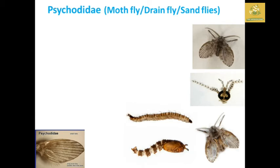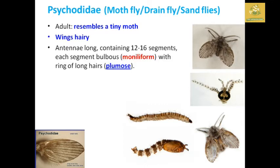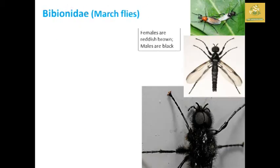Psychodidae comprises moth flies, drain flies, and sand flies. Adults resemble tiny moths. Wings are hairy. The antennae are long and contain 12 to 16 segments, each bulbous — known as moniliform antennae — with a ring of hairs which forms a plumose appearance. Adults are vectors of many human diseases.